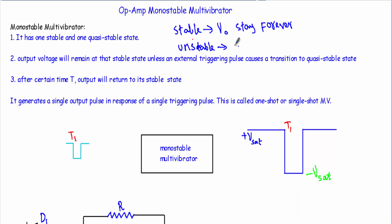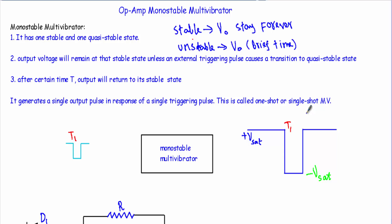In the quasi-stable or unstable state, our output voltage will have a transition from its stable state to this unstable state and VO will stay at that level for a brief interval of time. Output voltage will remain at the stable state unless an external triggering pulse causes a transition. After a certain time T, the output voltage will return to its stable state, generating a single output pulse in response to a single triggering pulse. Therefore the monostable multivibrator is sometimes called a one-shot or single-shot multivibrator.